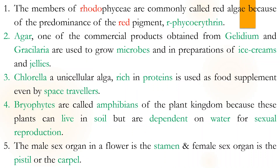Members of Rhodophyceae are called red algae because they contain the pigment phycoerythrin — and rodo itself means red, so you can remember it that way. Agar is one commercial product derived from red algae, from Gracilaria or Gelidium. In biotechnology, when growing plants in the lab, agar is used as a medium instead of soil — called agar-agar medium. It is also used in ice cream and jellies.